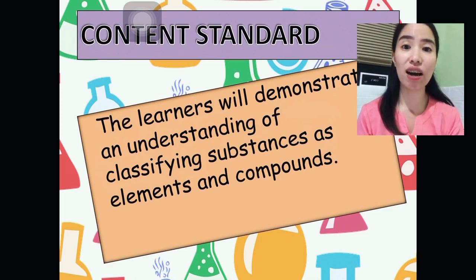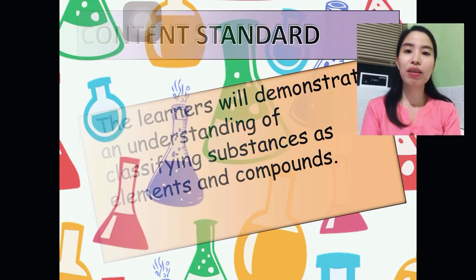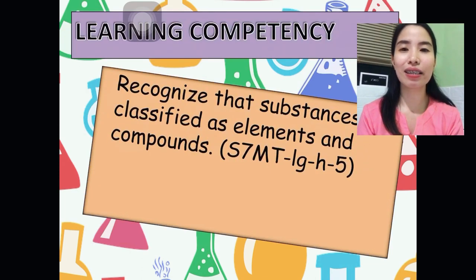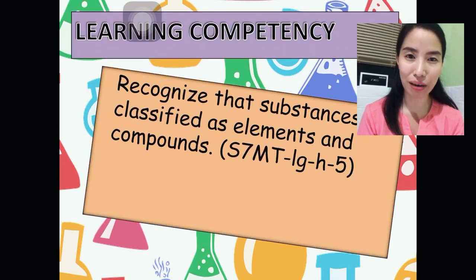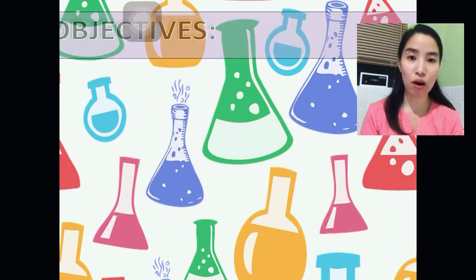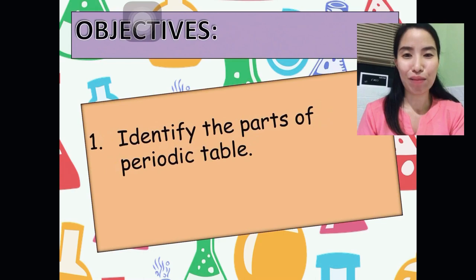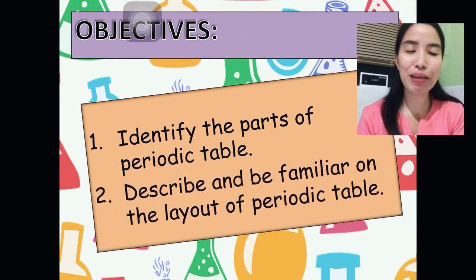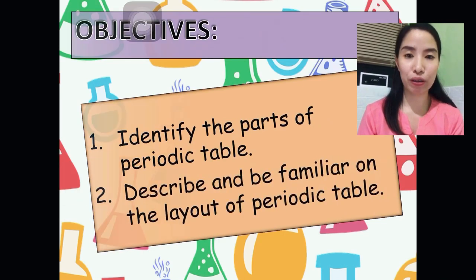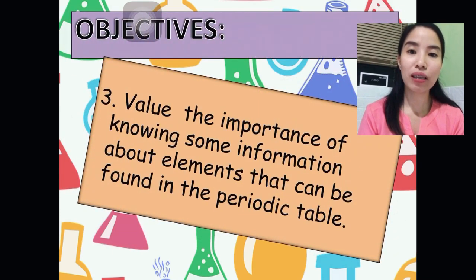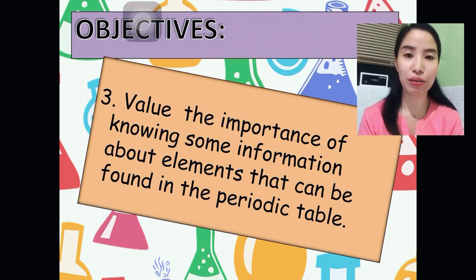For the learning competency, recognize that substances are classified as elements and compounds. The objectives are: identify the parts of Periodic Table. Second, describe and be familiar on the layout of Periodic Table. And last is, value the importance of knowing some information about elements that can be found in the Periodic Table.